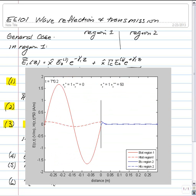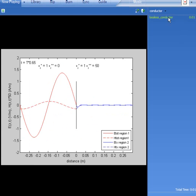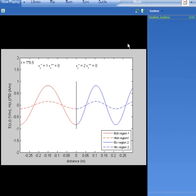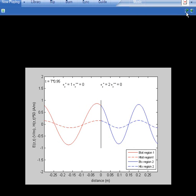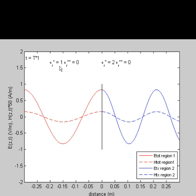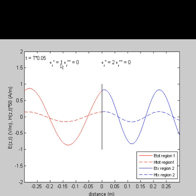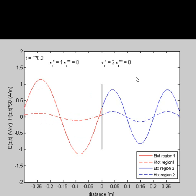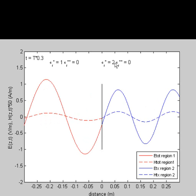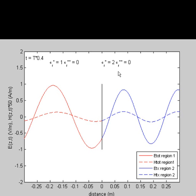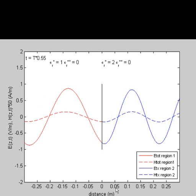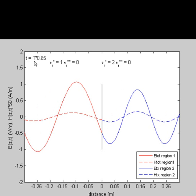Let's take a look at the lossless-lossless case, where I have air in region 1 with a real permittivity — real epsilon prime of 1 and double epsilon prime of 0 — and in region 2, I also have a lossless medium with relative permittivity of 2. I've illustrated both the electric field and the magnetic field as a function of space — in this case the z direction, because the wave is propagating in z — and also as a function of time, where t is the period.